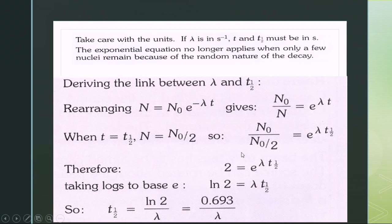We are left with 2 = e^(λt½). Taking logs to base e on both sides: ln(2) = λt½, or t½ = ln(2)/λ = 0.693/λ. This is the relationship between half-life and the decay constant.